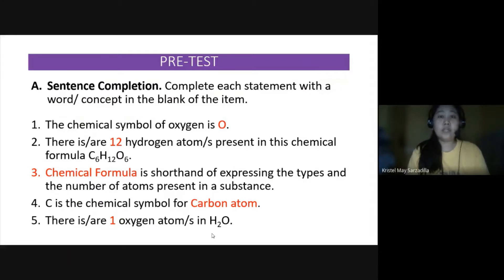Now, bring out your answers from the pre-test. Check your own paper. Number one, the chemical symbol of oxygen is O. Two, there are 12 hydrogen atoms present in the chemical formula C6H12O6. Number three, chemical formula is shorthand of expressing the types and the number of atoms present in a substance. Number four, C is the chemical symbol for a carbon atom or simply carbon. And number five, there is one oxygen atom in the molecule H2O.